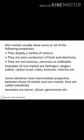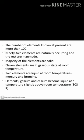Non-metals display a variety of colors. They are poor conductors of heat and electricity, not lustrous, not sonorous, and not malleable. Examples of non-metals are hydrogen, oxygen, iodine, carbon, bromine, and chlorine. Elements that have intermediate properties between metals and non-metals are called metalloids. Examples are boron, silicon, and germanium.